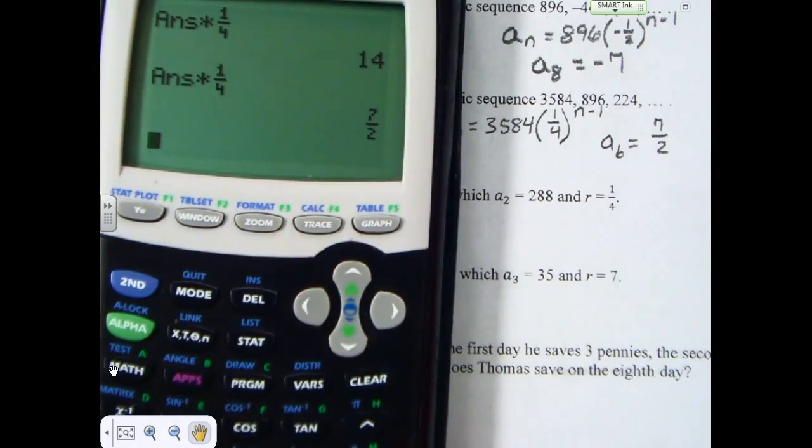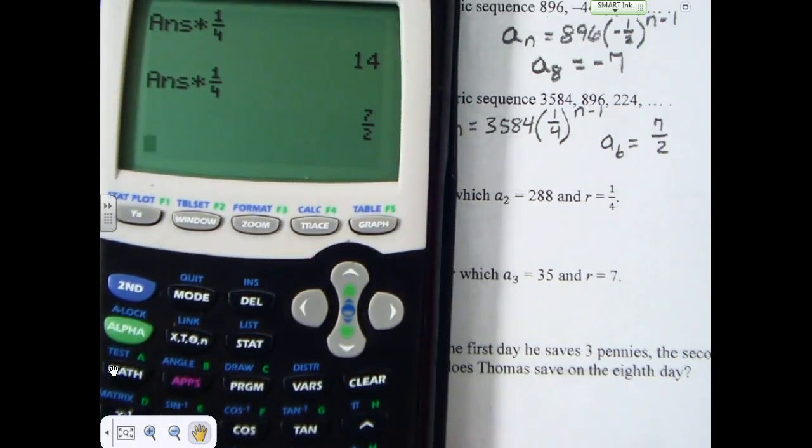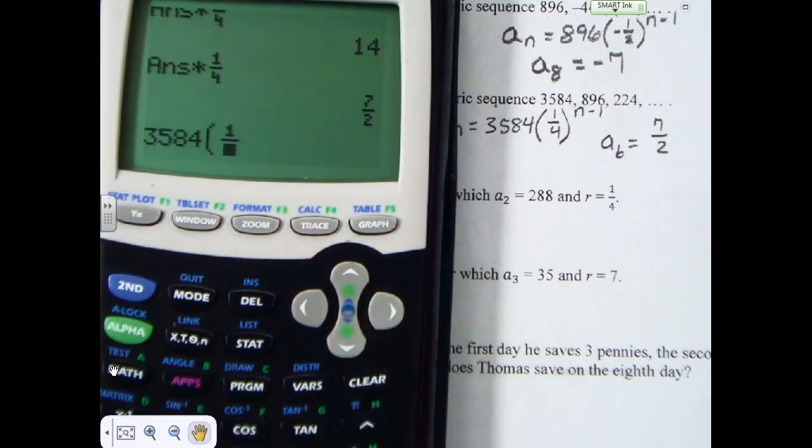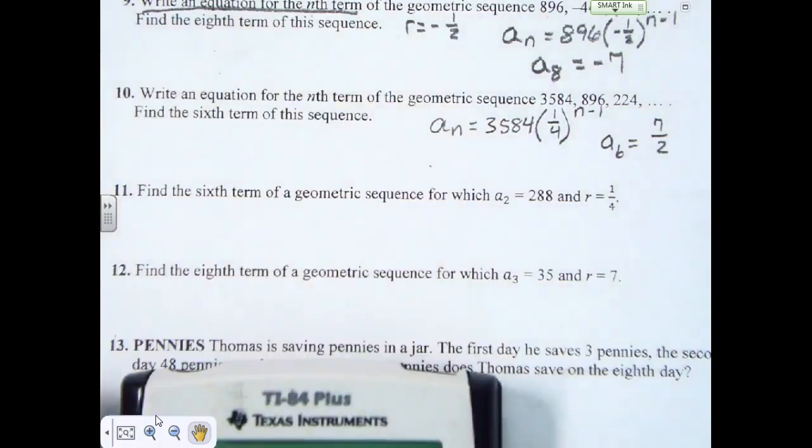Now, will that work for the equation? It better. 3,584 times 1 fourth raised to the 6 minus 1 power is also 7 halves. You can choose to use the equation or use a logical progression multiplying by that common ratio to find the successive terms. Now, let's move on to number 11.